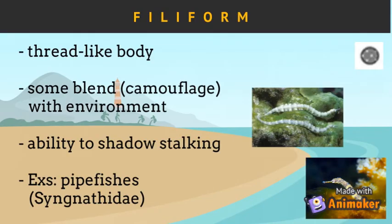The fifth type is the filiform. Filiform fish have a thread-like body structure. Some usually blend or camouflage with their environment and have the ability to shadow-stalk, especially when capturing prey.